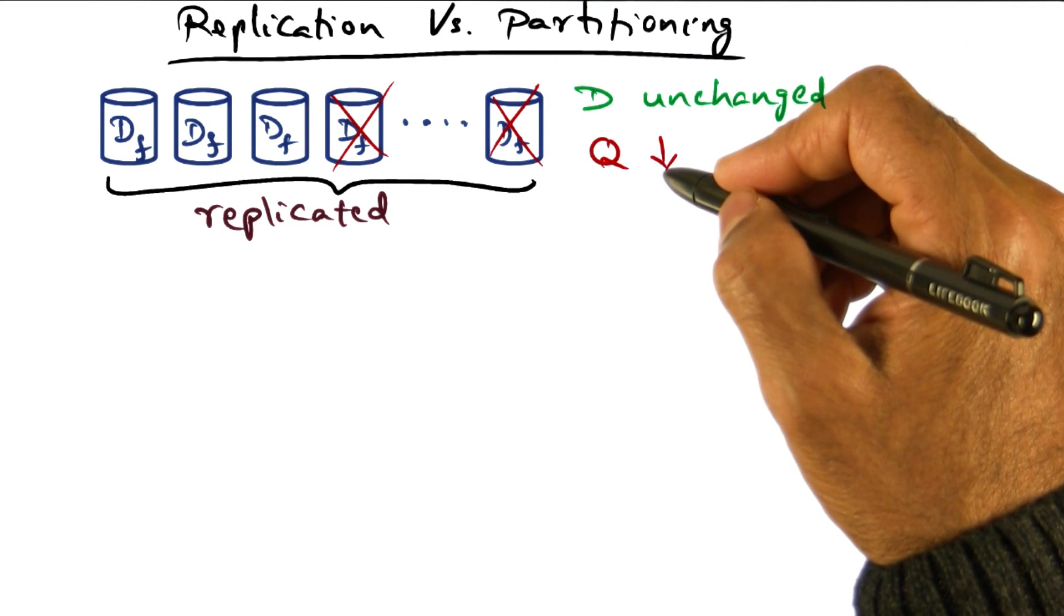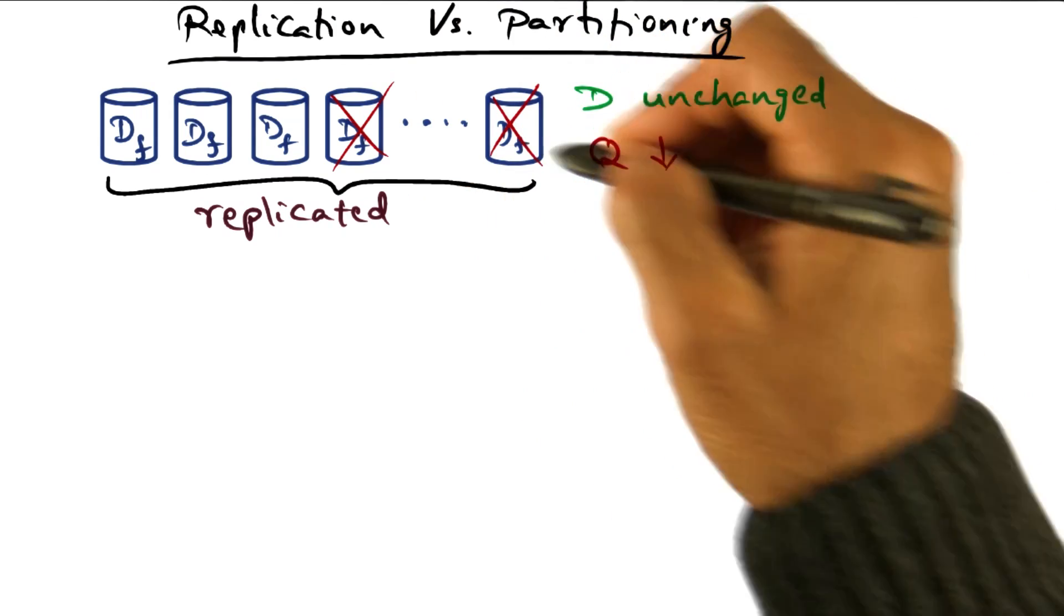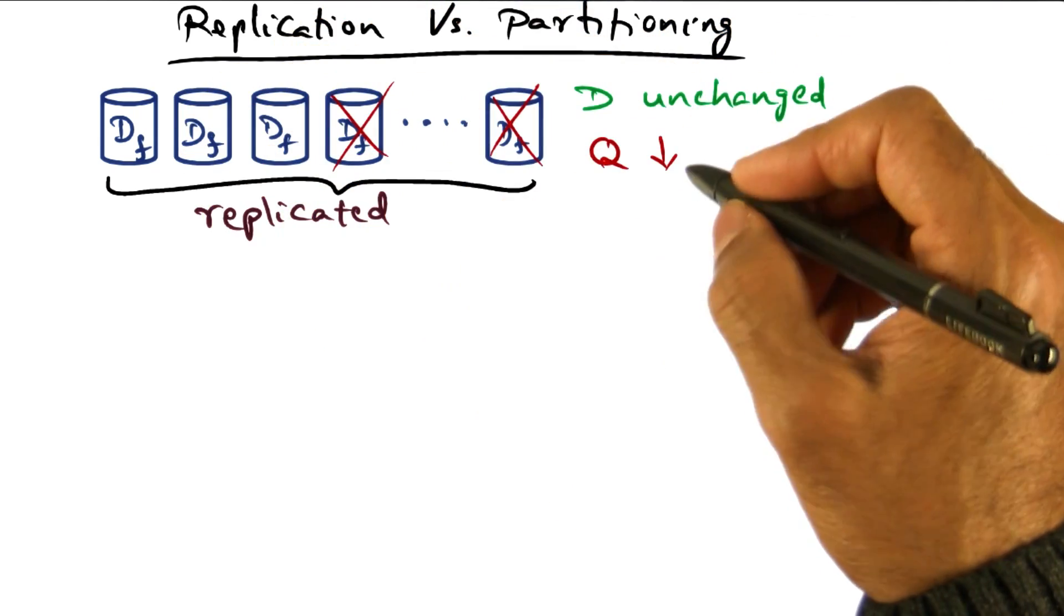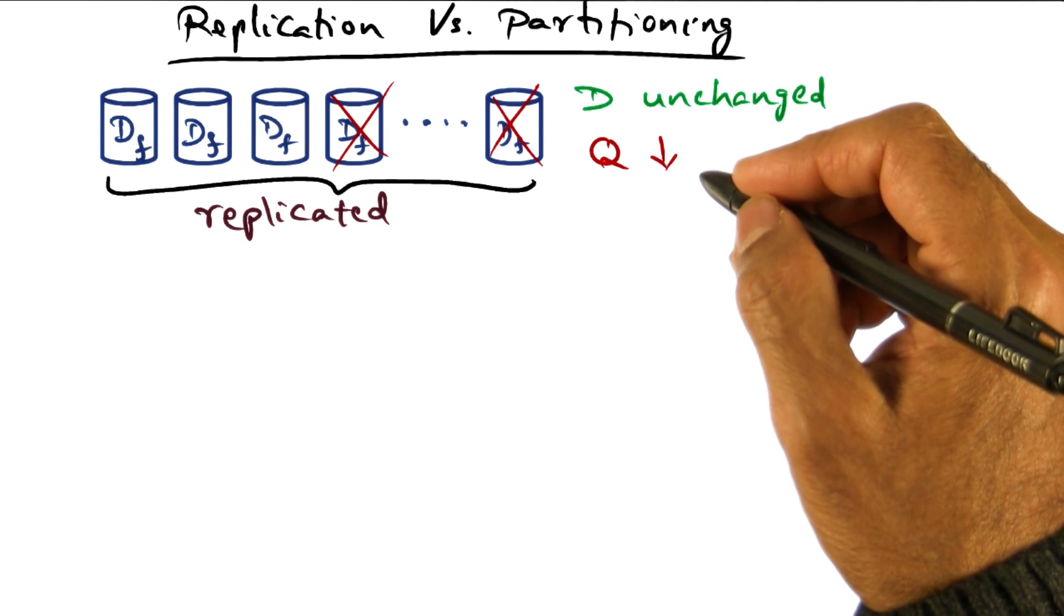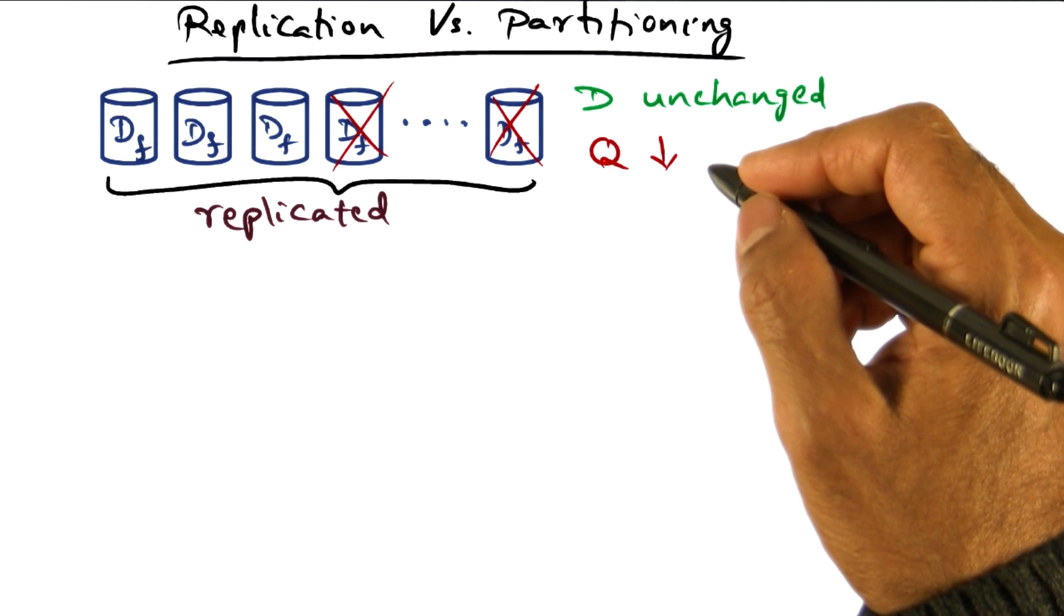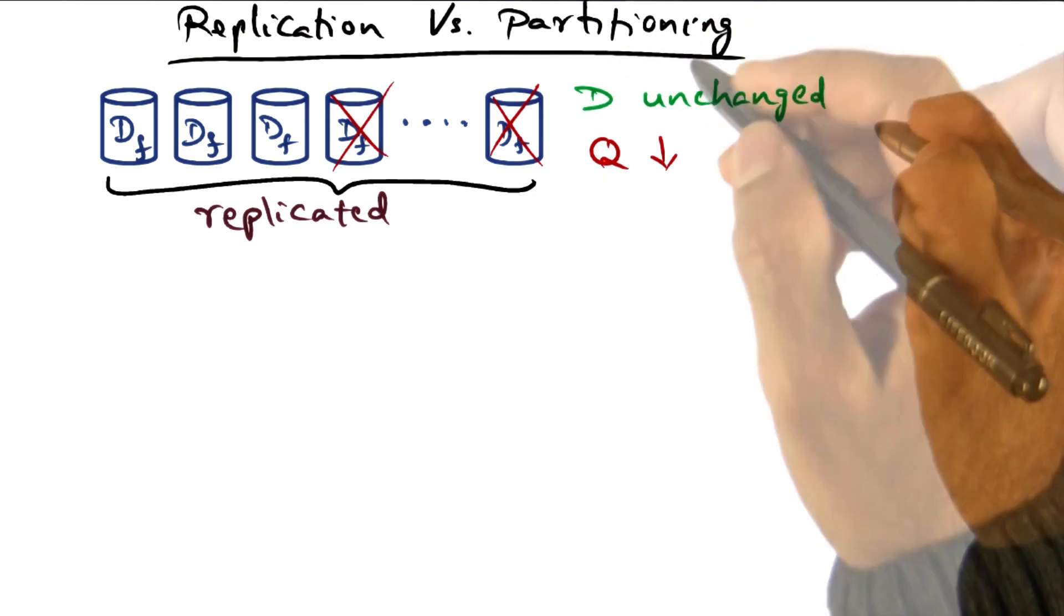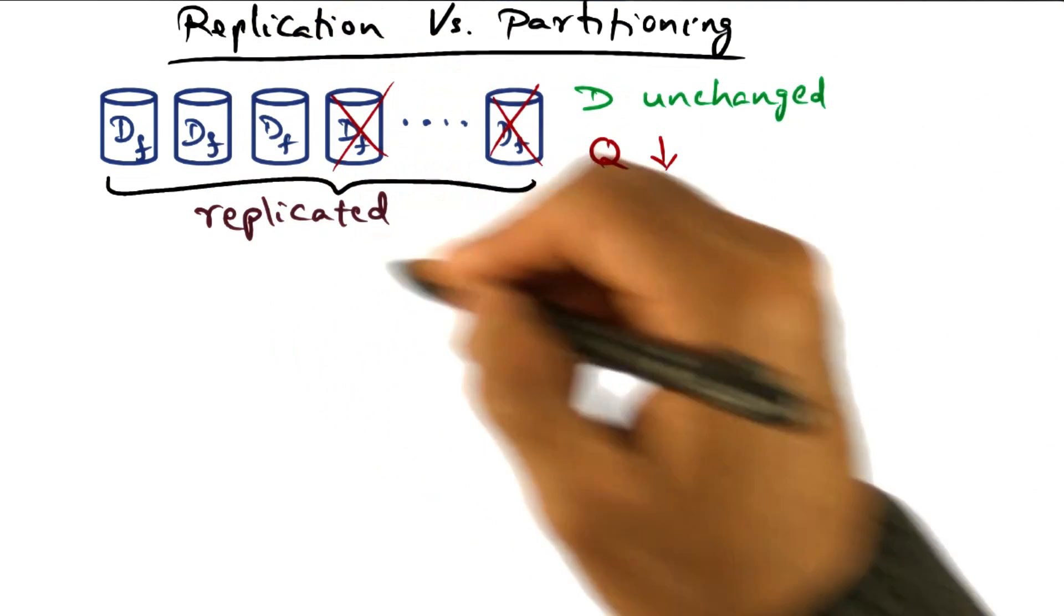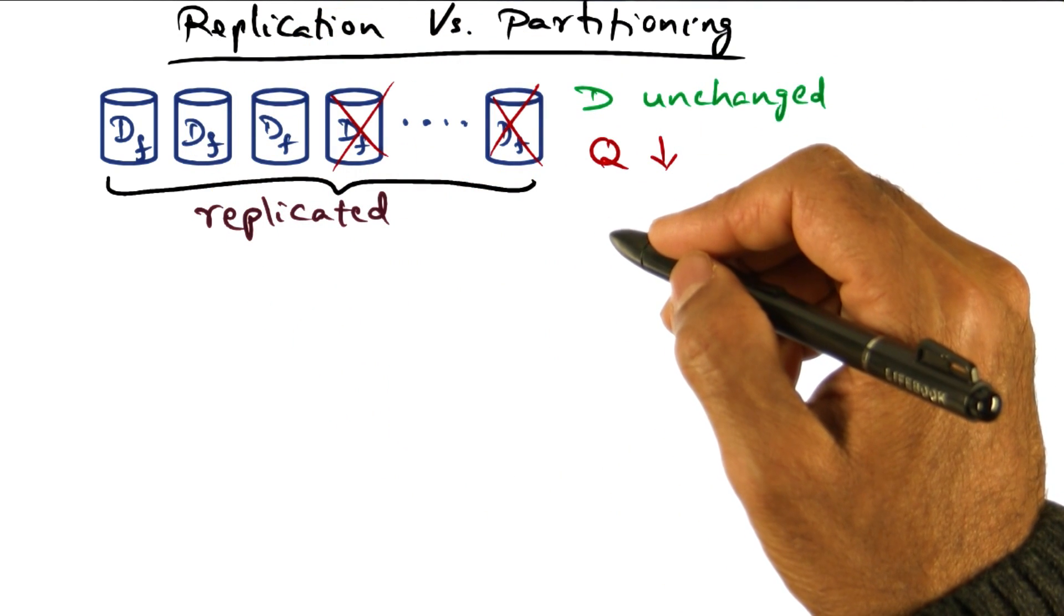On the other hand, because the server capacity has come down due to these failures, the yield is going to come down. In other words, with replication, the service is unavailable for some users for some amount of time. But all the users that are able to get the service get complete harvest in terms of the fidelity for the query that is returned and answered by the server.